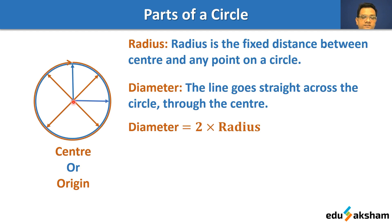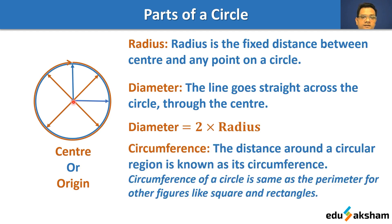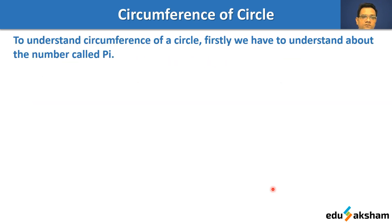When we go around the circle once, we get the circumference. The distance around the circular region is known as its circumference. The circumference of a circle is the same as the perimeter for other figures like squares and rectangles. For squares and rectangles we use 'perimeter'; for a circle we use 'circumference.'